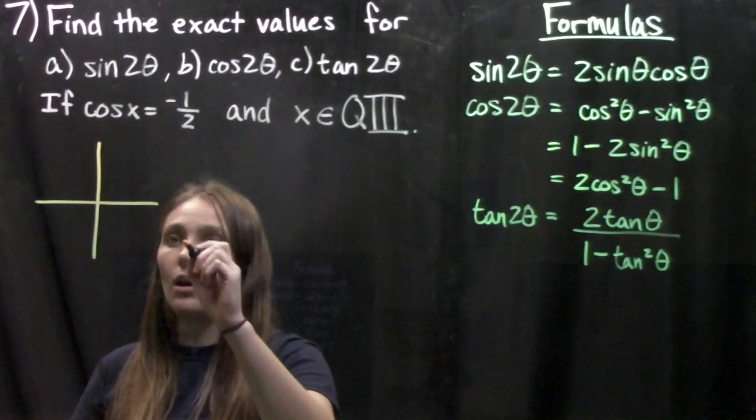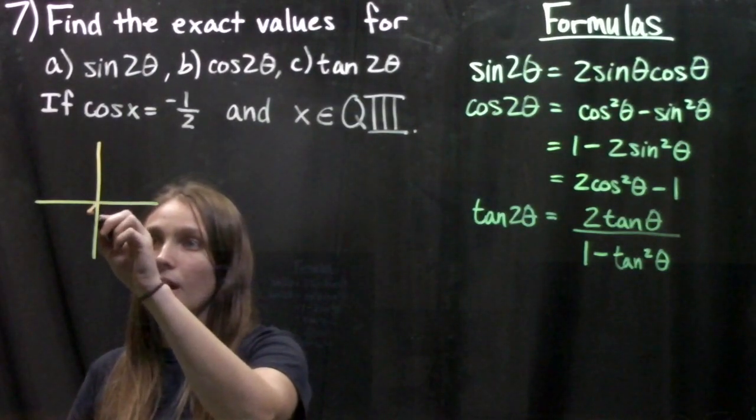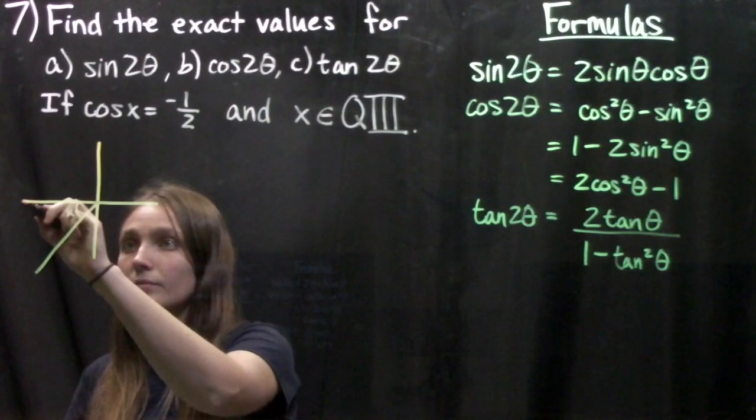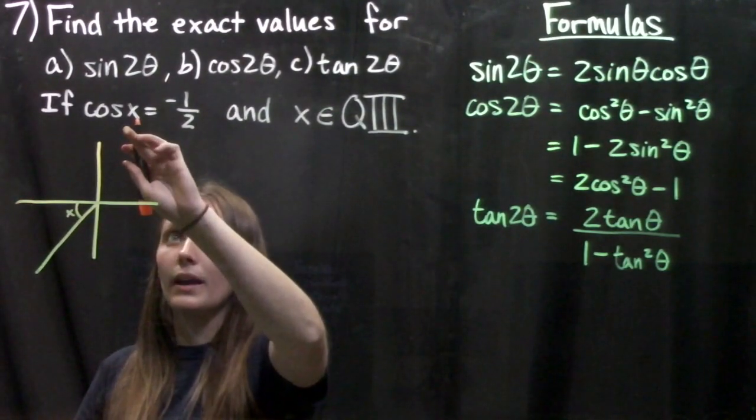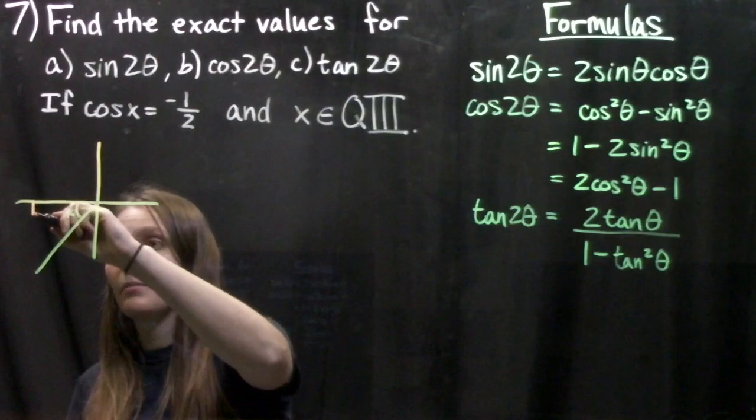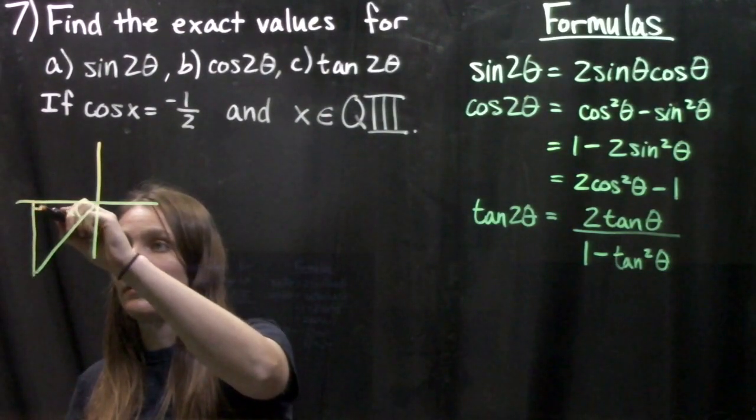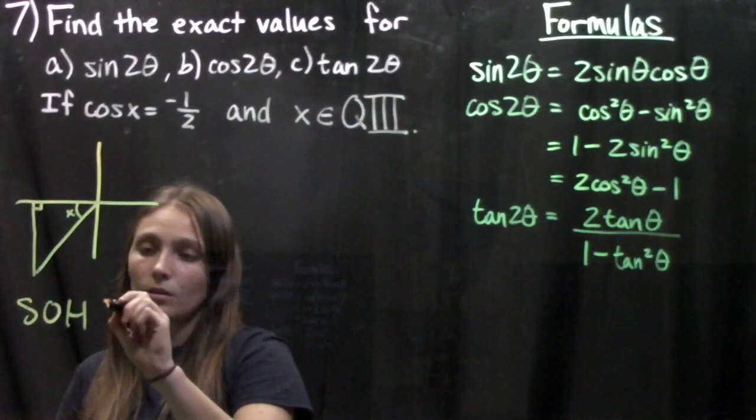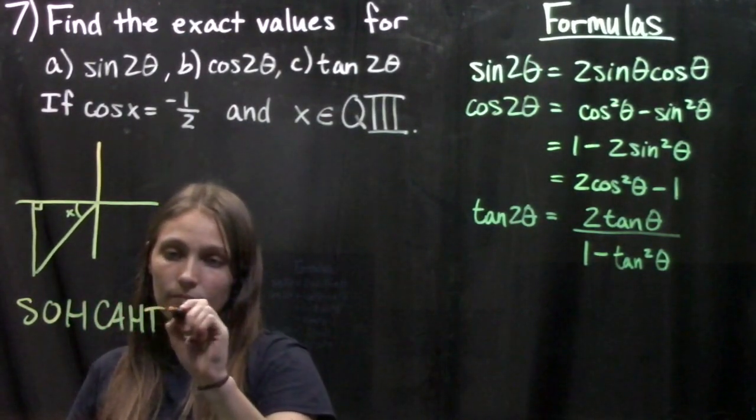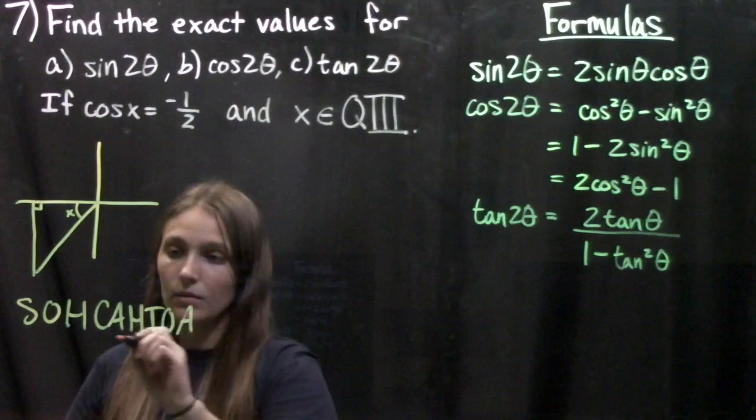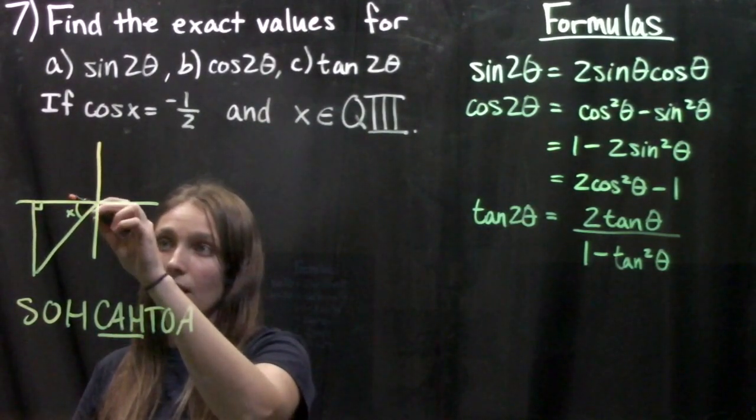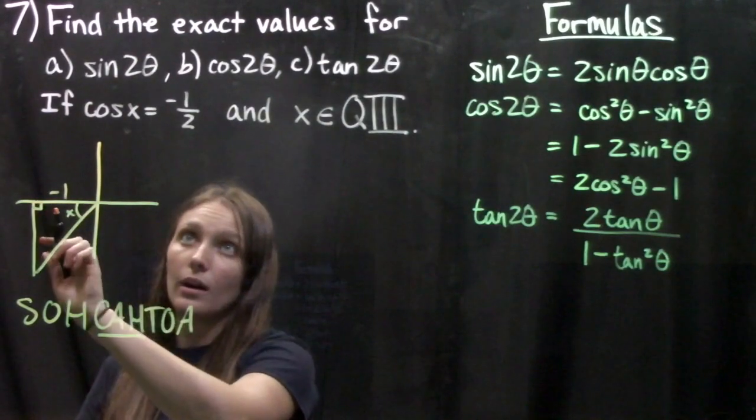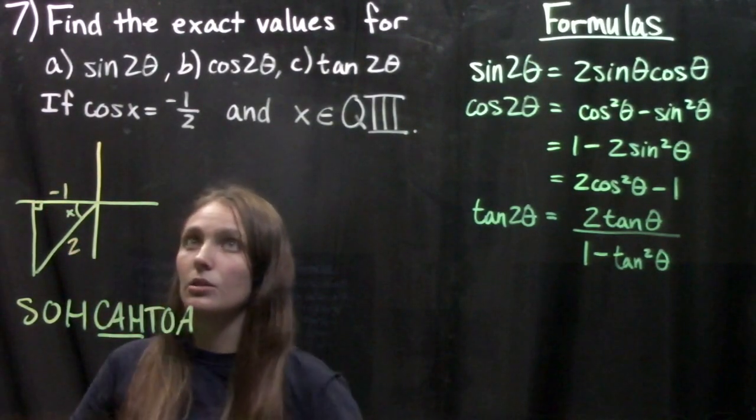We'll draw our coordinates and draw out this x angle here. It says the cosine of x equals negative half and I'll make this our triangle. We know that cosine from SOHCAHTOA is equal to the adjacent over the hypotenuse. So we've got negative 1 here going out to the negative x axis and our hypotenuse is 2.